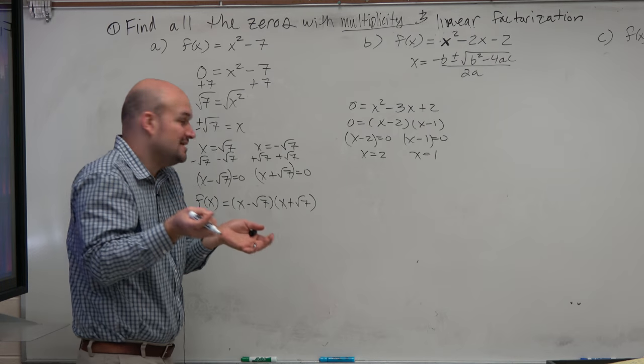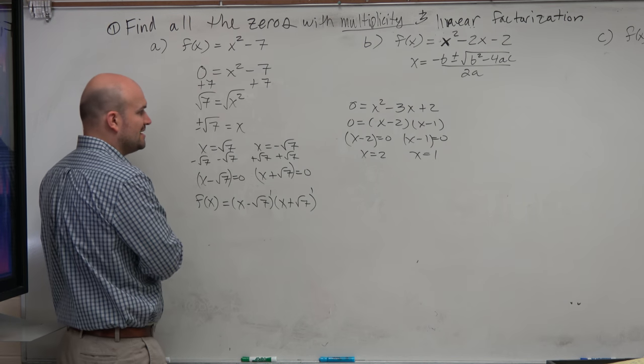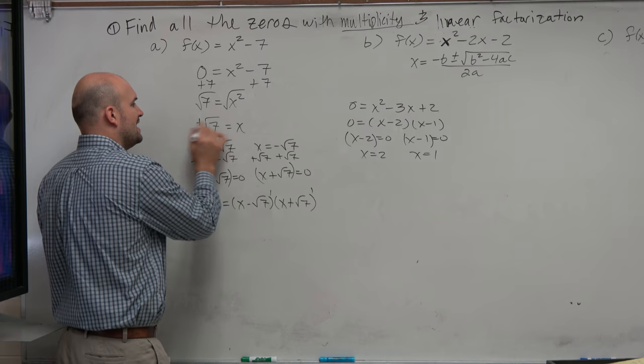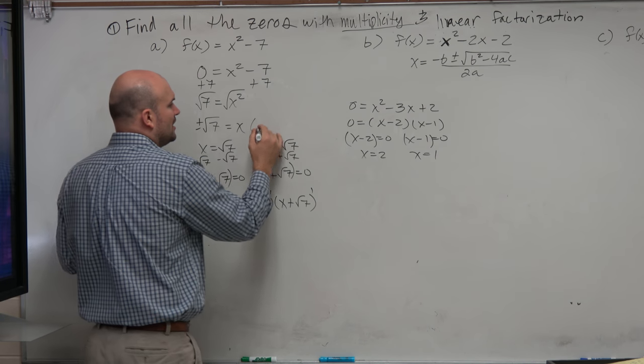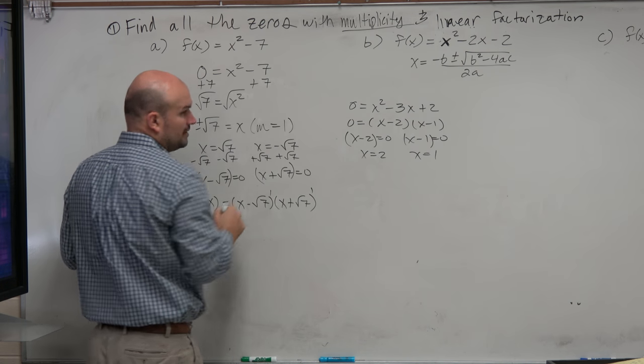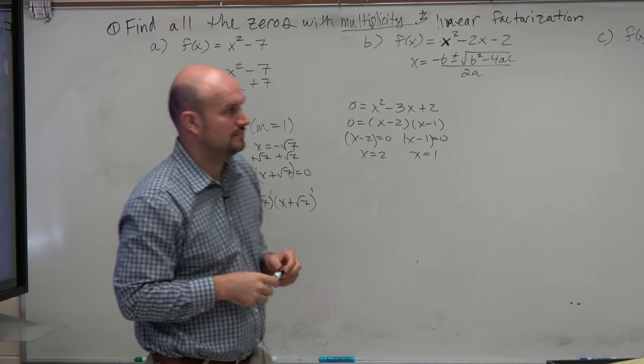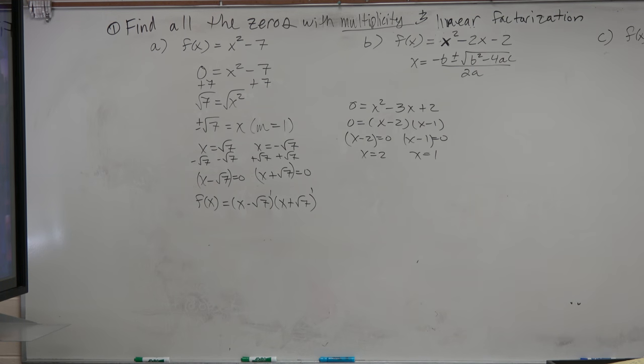And also it's helpful, now that I know the linear factorization, I know what the multiplicity is of my linear factors, right? So I could say x is equal to plus or minus square root of 7, and they all have a multiplicity equal to 1. Any questions on that?